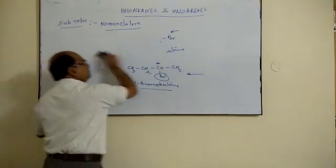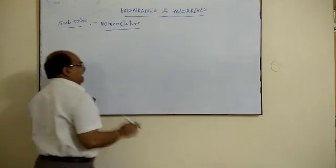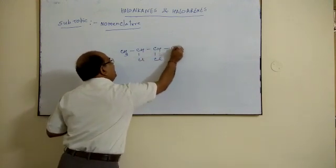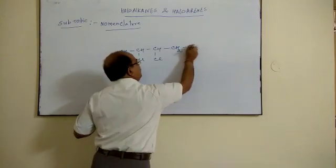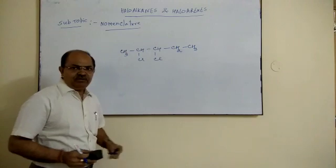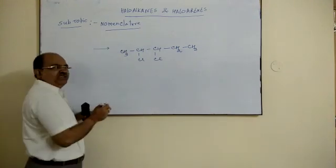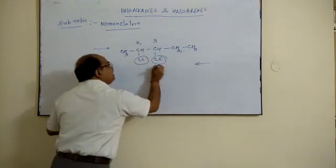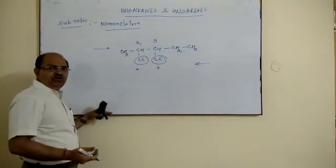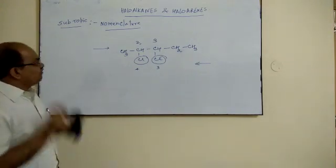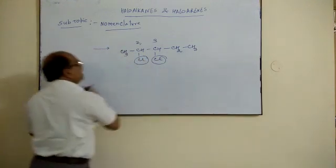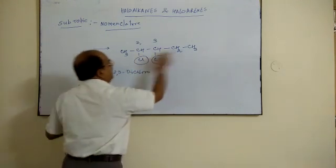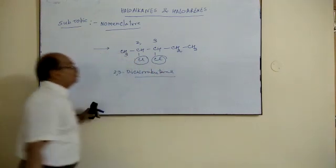Now suppose we have a compound CH₃CHClCHClCH₃. There are two halogens here — both are chlorine. If we count from one side, the set of locants is 2 and 3. If we count from the other side, the set of locants is 3 and 4. In IUPAC nomenclature, the set of locants should be the lowest. Therefore the correct nomenclature uses 2,3 — giving us 2,3-dichlorobutane.